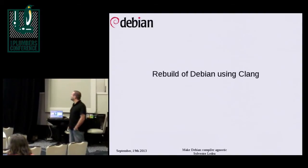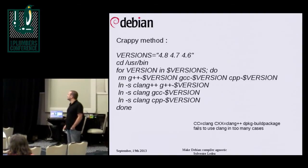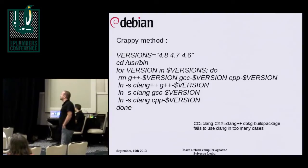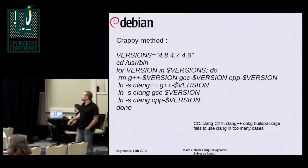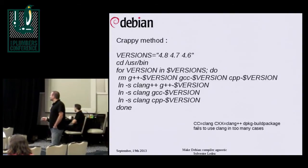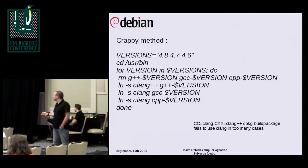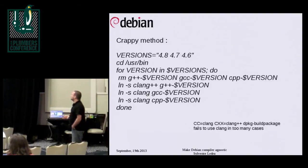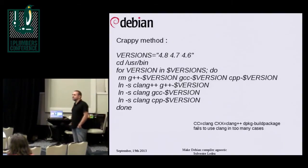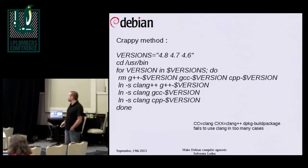Now I'm going to present the results of the rebuild of Debian using Clang. It's a crappy method: since Clang accepts the same arguments as GCC, I go into /usr/bin, remove GCC, and create a symlink to Clang. It is very dirty but it works. I tried using the CC and CXX environment variables, but about 40% of packages do not respect such declarations — that's a bug in upstream, but it's a huge task to fix half of the Debian packages.